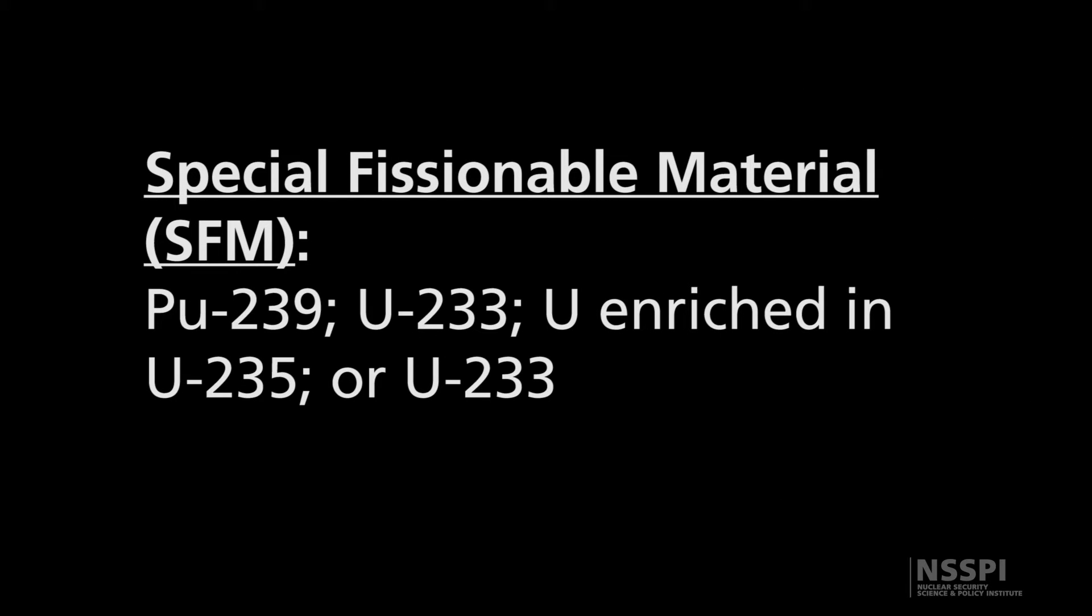Source material could then lead to special fissionable material, which is plutonium-239, U-233, uranium enriched in U-235, or U-233. Special fissionable material is the material that we would actually use for a reactor, or that could be used in the manufacture of a nuclear explosive device.